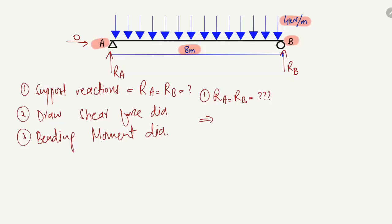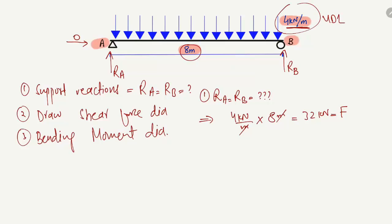To find the support reactions, multiply the uniformly distributed load by the distributed length. The UDL is 4 kN per meter and the length is 8 meters, so 4 × 8 = 32 kN. We convert this UDL into a concentrated point load of 32 kN acting at the center of the beam.